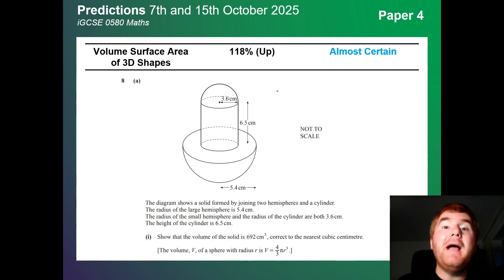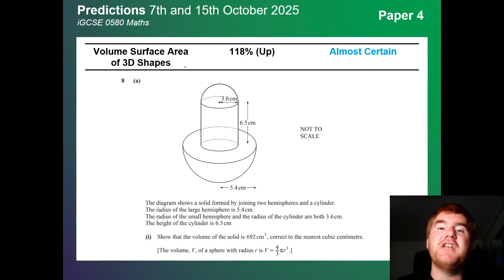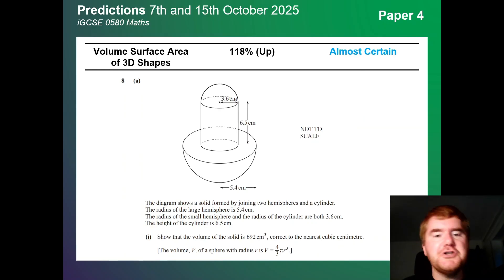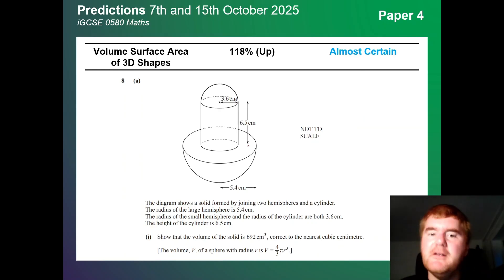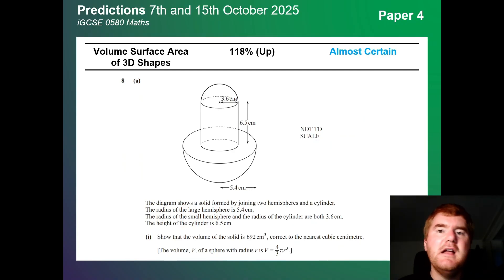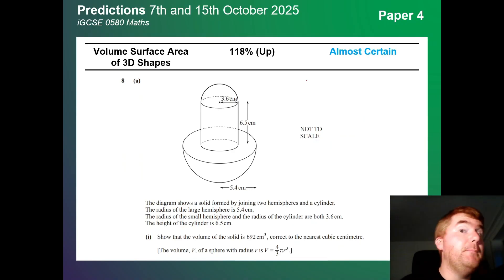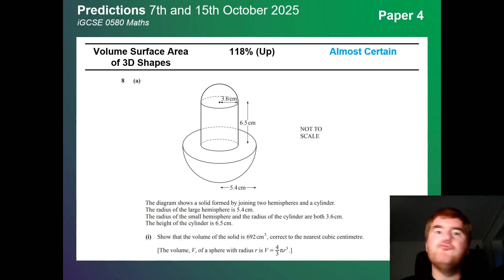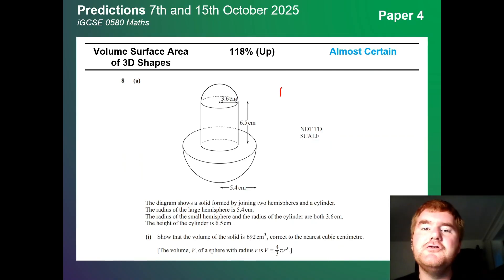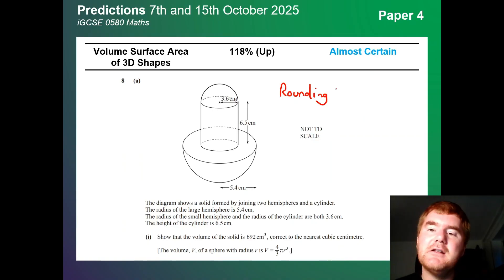On to Paper 4. No surprise — volume and surface area of 3D shapes: you're pretty much guaranteed to get one big question involving this. Notice you may have to work out volumes of a hemisphere and cylinder. On Paper 2 they do it in terms of pi; on Paper 4 you're rounding to two decimal places. Watch out for rounding errors, as that can lose you marks throughout the sub-questions.